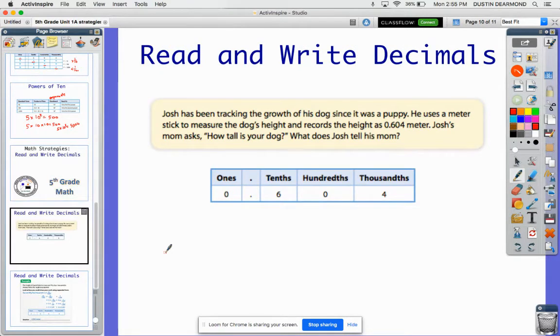It says Josh has been tracking the growth of his dog since he was a puppy. He uses a meter stick to measure the dog's height and records the height as 0.604 meters. Josh's mom asks, how tall is your dog? What does Josh tell his mom?